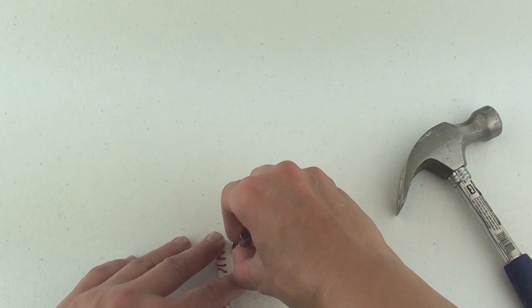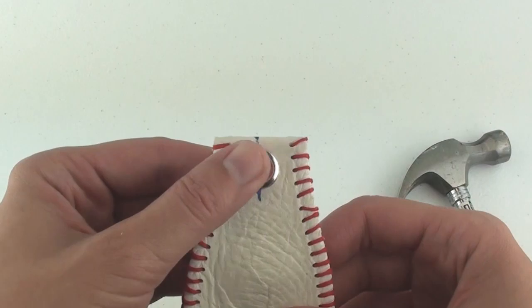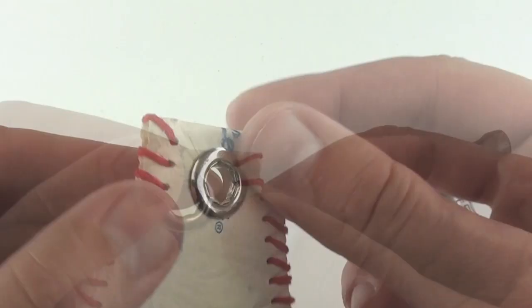Once hammered, try to pry your grommet apart. If it does not come apart, you are good. If it does come apart, use the setting tool again.